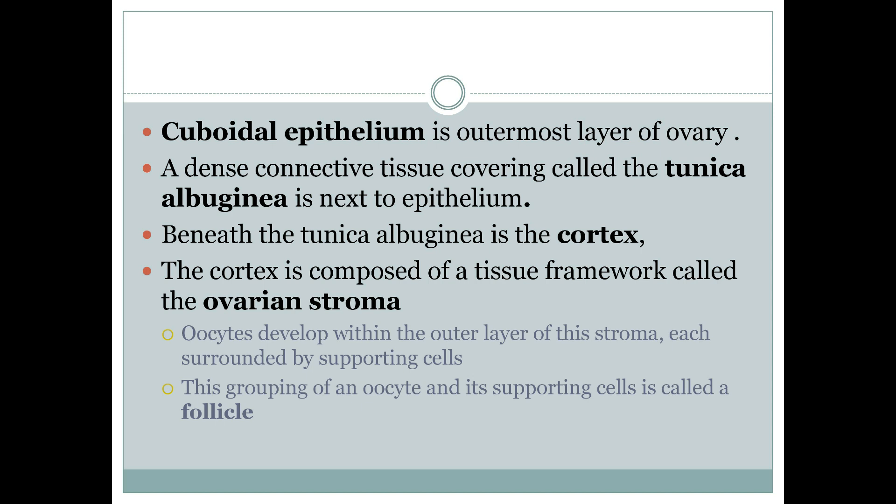If you have knowledge of tissues, you will be familiar with epithelial tissues, which serve as an outer covering. After the epithelium, we have tunica albuginea, which is composed of dense connective tissue. Following tunica albuginea is the cortex, which is composed of a tissue framework called ovarian stroma. Ovarian stroma is very important because it is exactly where oocytes develop.